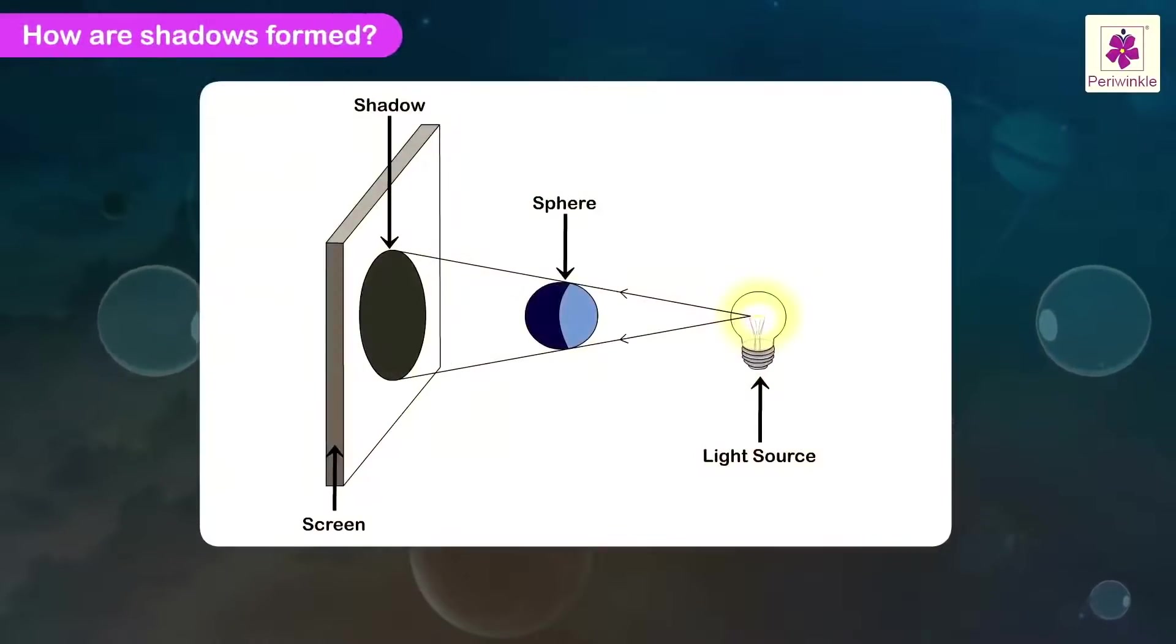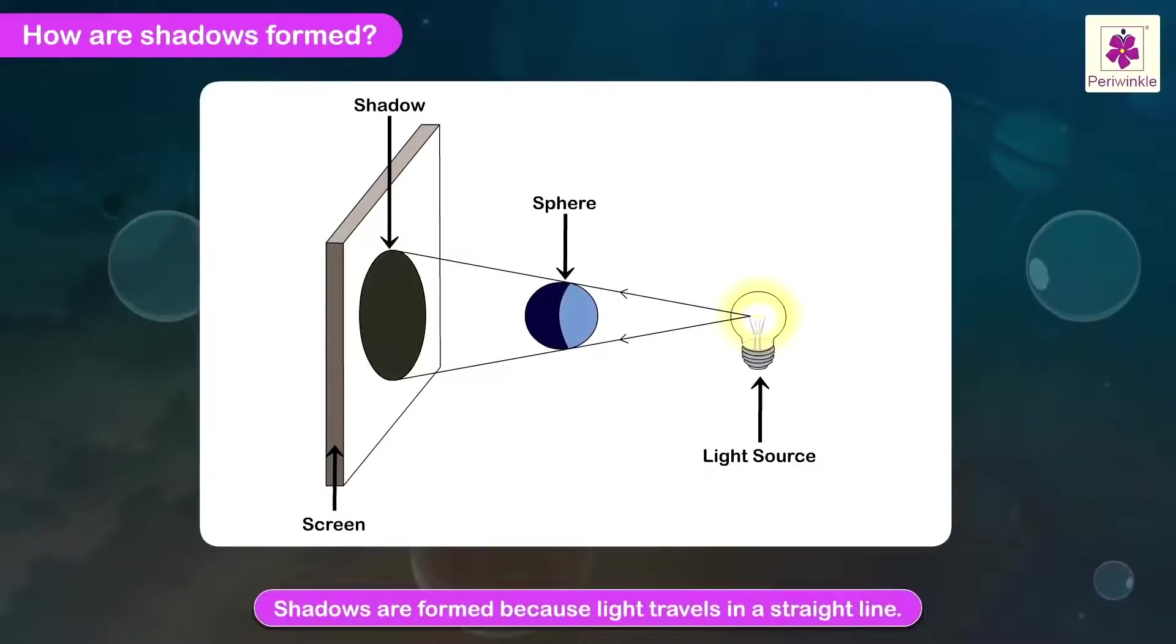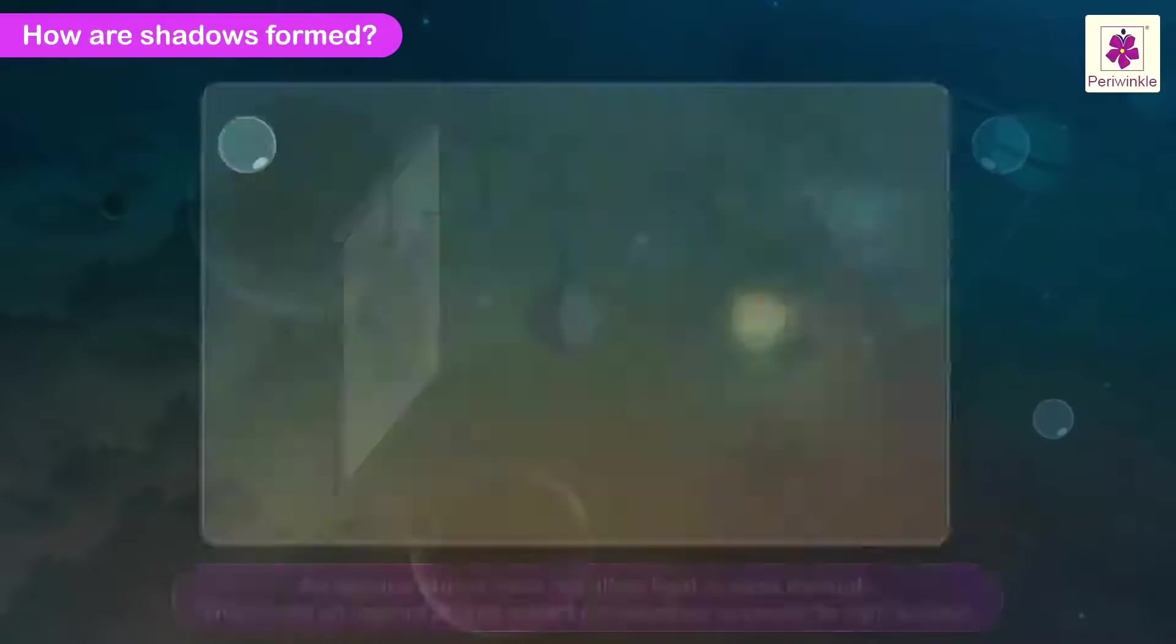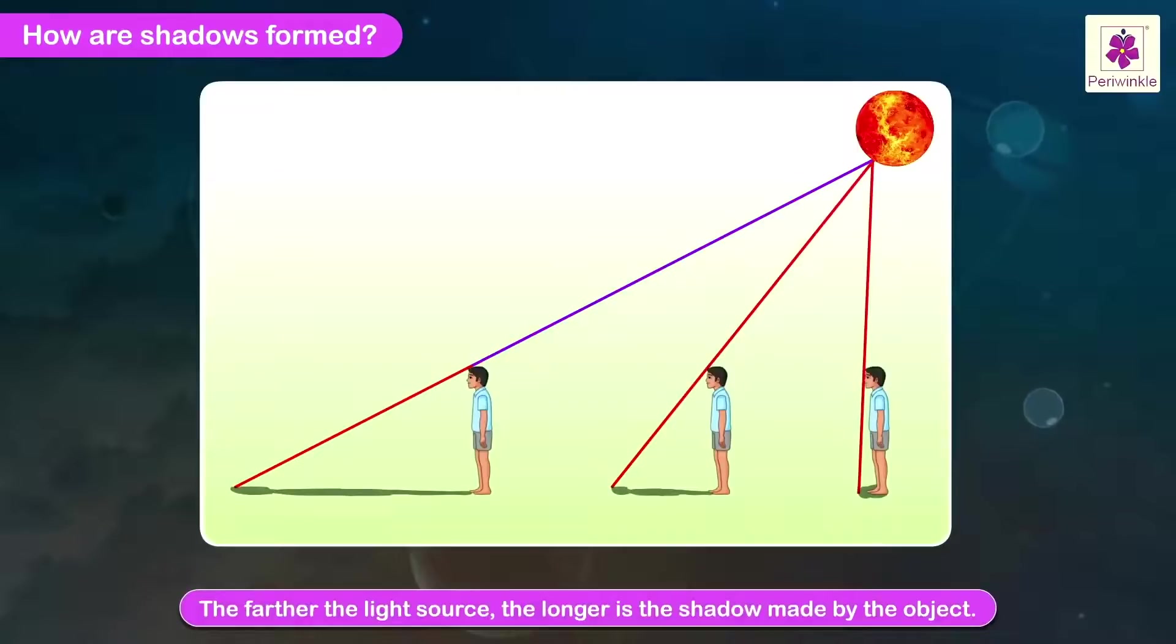How are shadows formed? Shadows are formed because light travels in a straight line. An opaque object does not allow light to pass through. This forms an imprint of that object on a surface opposite to light source. The farther the light source, the longer is the shadow made by the object.